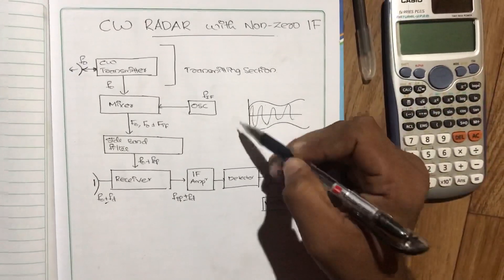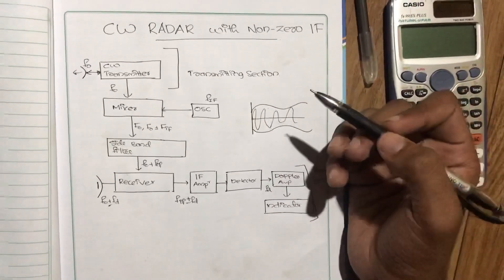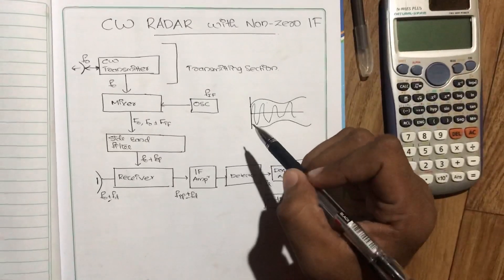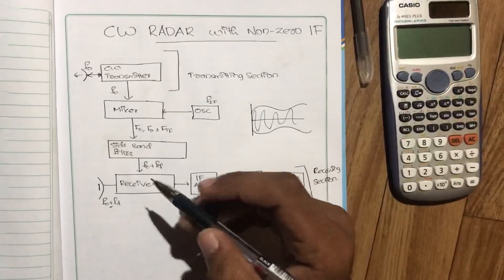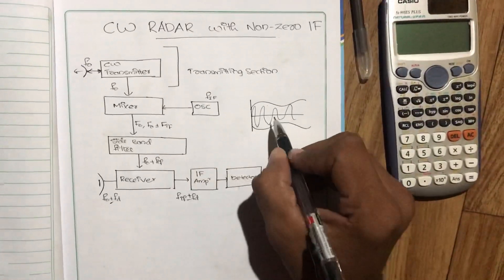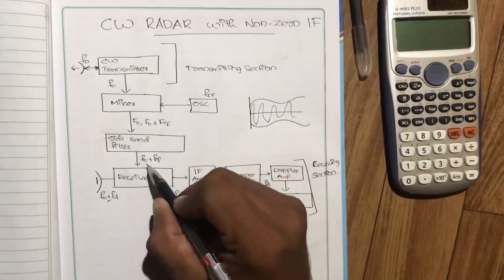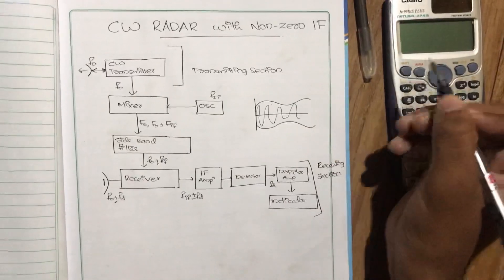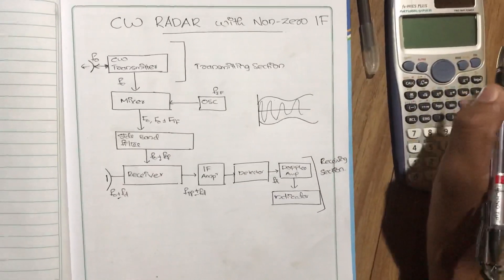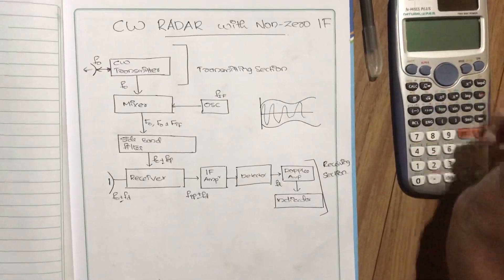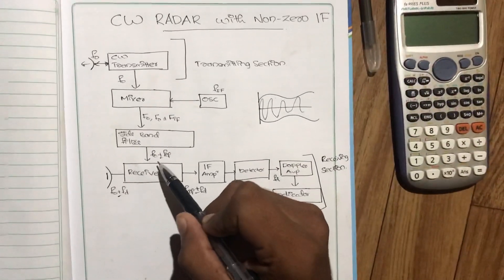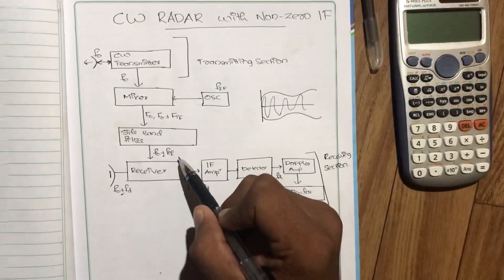Here are two sidebands. We have a sideband filter. You have a sideband filter. This is the F0, FIF.